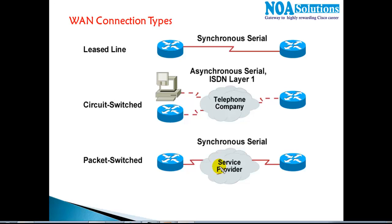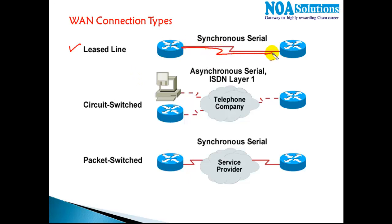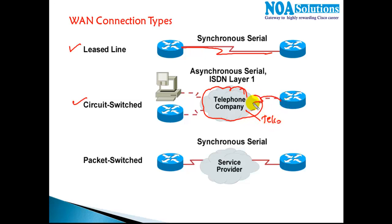There are different kinds of connections which service providers generally offer. Initially we have something called leased lines, where we get a separate dedicated WAN connection from the provider. Then we also have circuit switching technology, where a telephonic or telephone network can be used for sending data from one location to another. Or we have packet switching technologies like Frame Relay and ATM, which can be used for providing the connection.